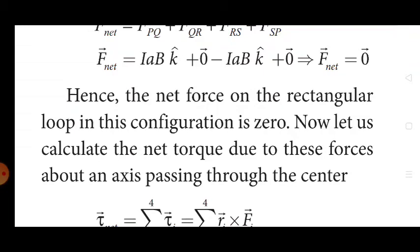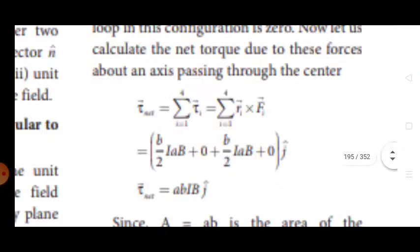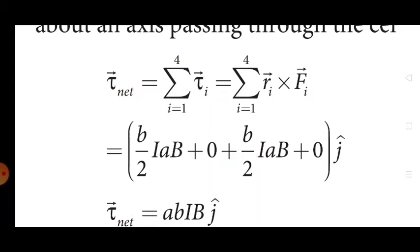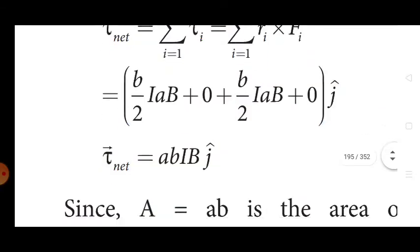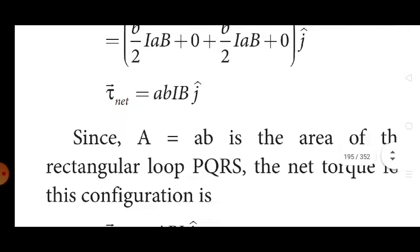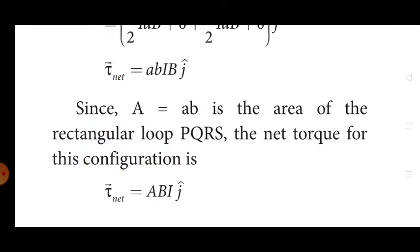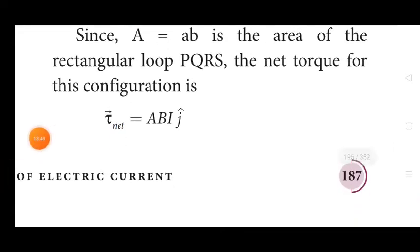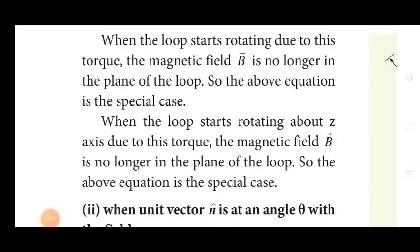Now let us calculate the net torque due to these forces about an axis passing through the center. The net torque is: τ = ABIBĵ. Since A = AB is the area of rectangle loop PQRS, the net torque for this configuration is: τ_net = ABIĵ. When the loop starts rotating due to this torque, the magnetic field B vector is no longer in the plane of the loop, so the above equation applies only in this special case.